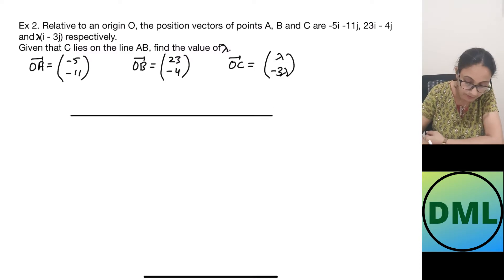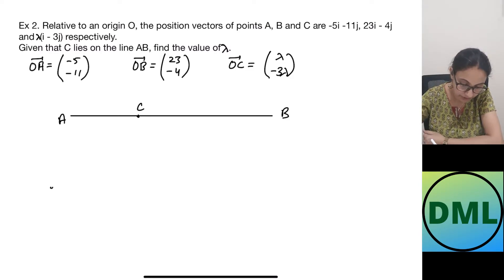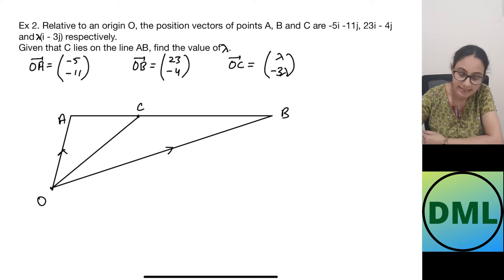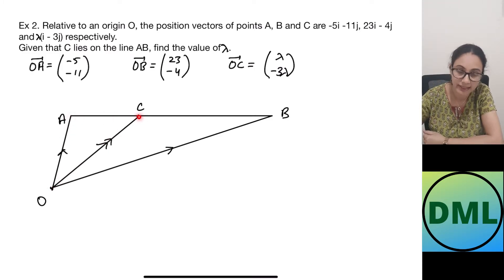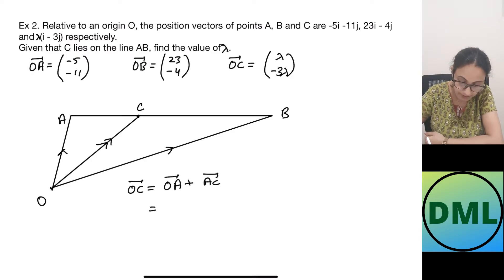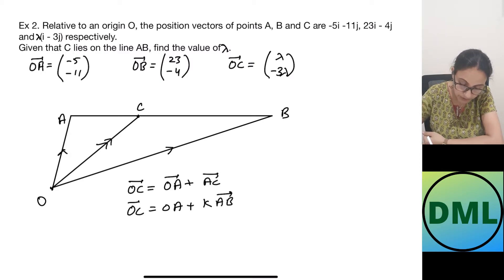Since C lies on line AB, we can draw the line with vector AB and point C on it. Applying the triangle law, vector OC equals OA plus AC. Since I do not know the ratio, AC can be written as K times AB. So vector OC equals OA plus K times AB, where AB equals OB minus OA.